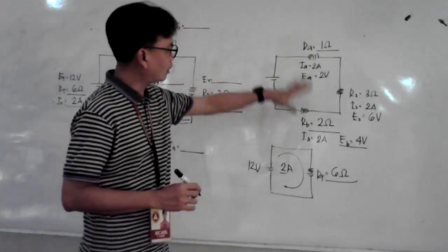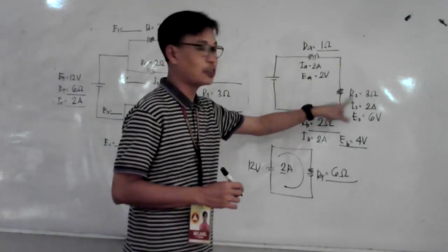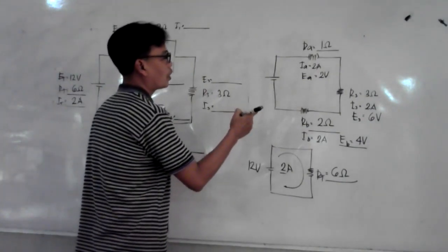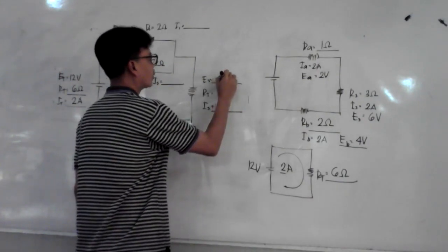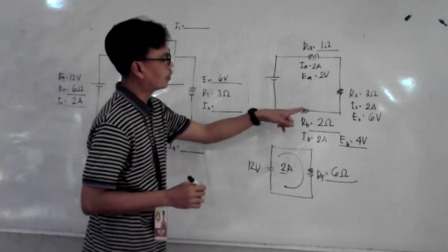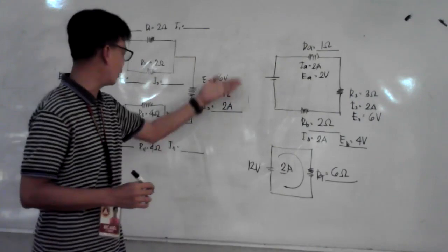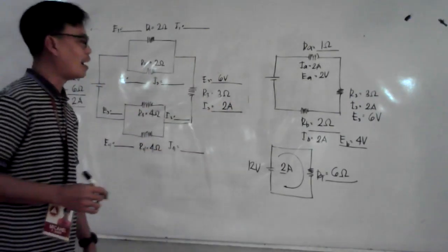Now we have the value for R3. We move to the original problem. Your E3 is 6 volts, your I3 is 2 amperes.